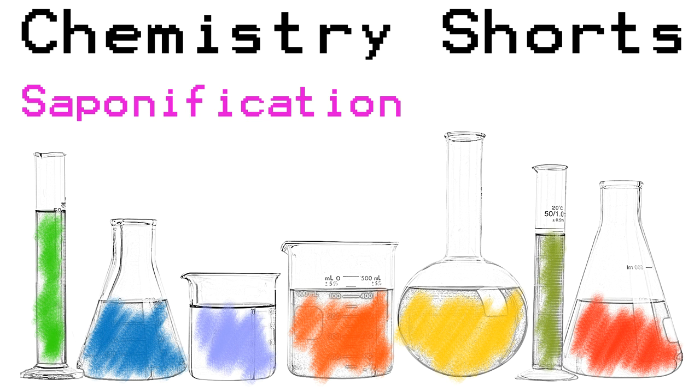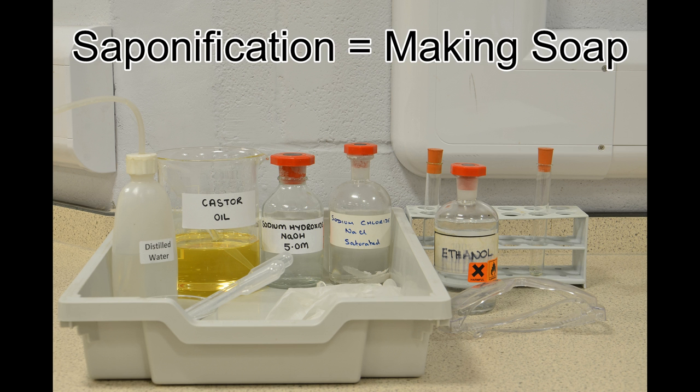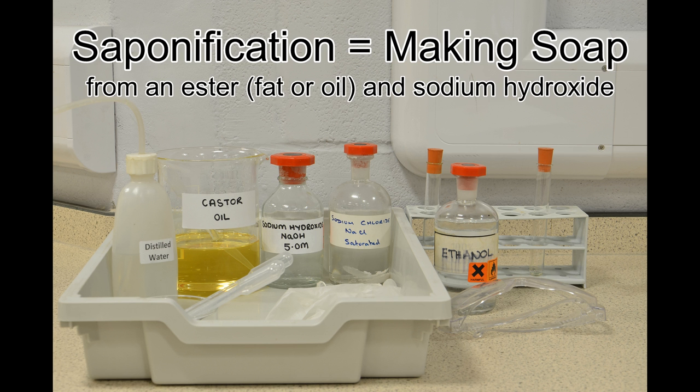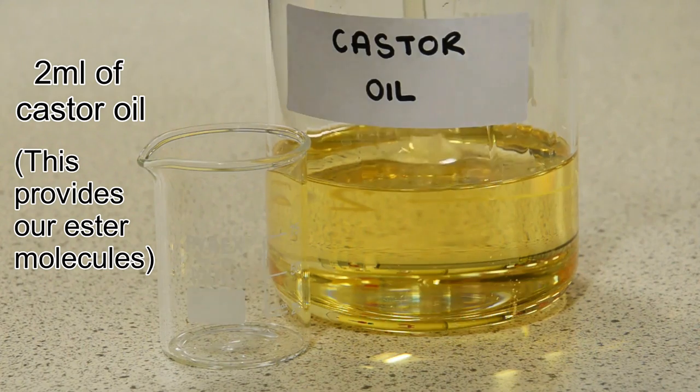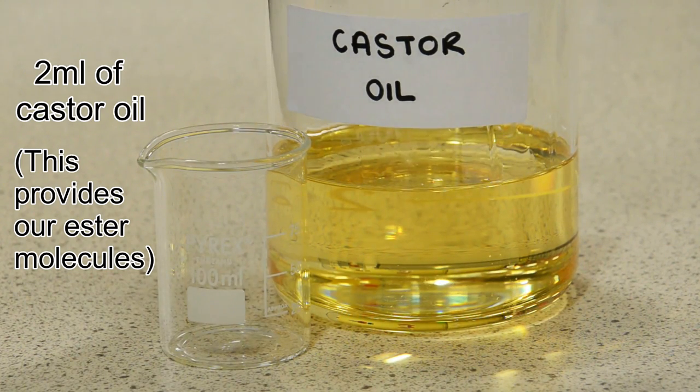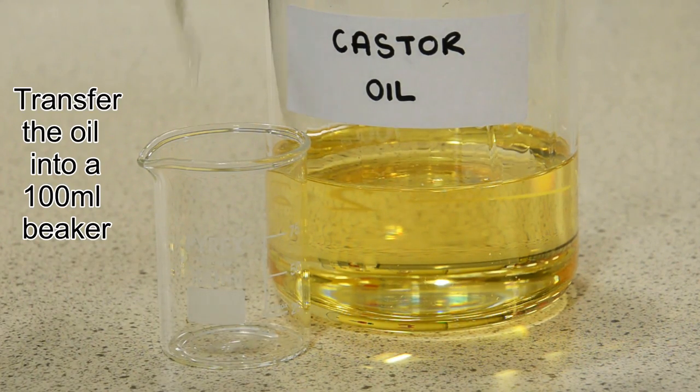Hello, today I'm going to be making soap using a saponification reaction. That is the reaction between a fat or an ester and an alkali. We're going to start with two milliliters of castor oil, that's going to be our fat or our ester, and I'm going to transfer that into a 100 milliliter beaker.